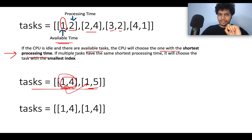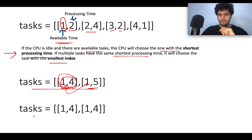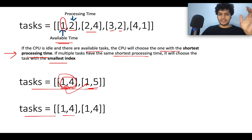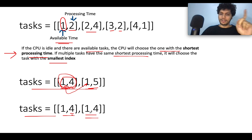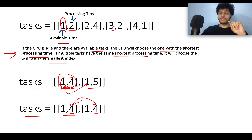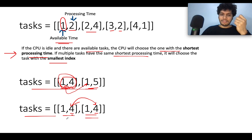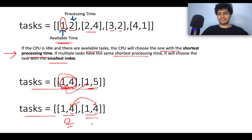The second rule says: if multiple tasks have the same shortest processing time, the CPU picks the one with the smallest index. For example, if two tasks are both available at the first instant and both have four units of processing time, the CPU selects the one at the lower index — that one executes first.